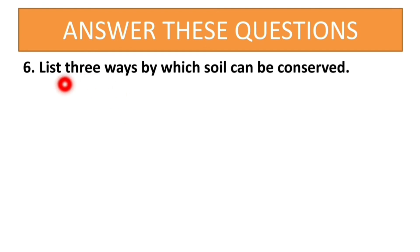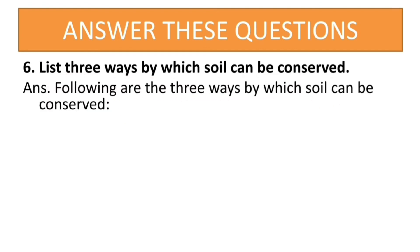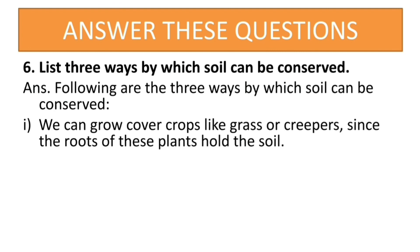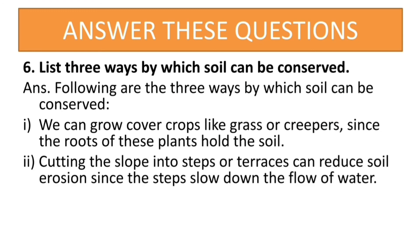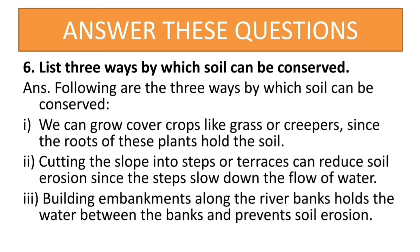List three ways by which soil can be conserved. First, we can grow cover crops like grass or creepers since the roots of these plants hold the soil. Second, cutting the slope into steps and terraces can reduce soil erosion since the steps slow down the flow of water. Third, building embankments along the river banks holds the water between the banks and prevents soil erosion.